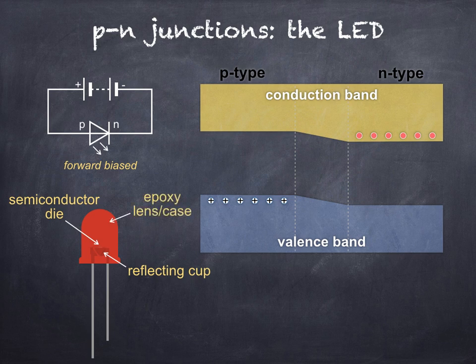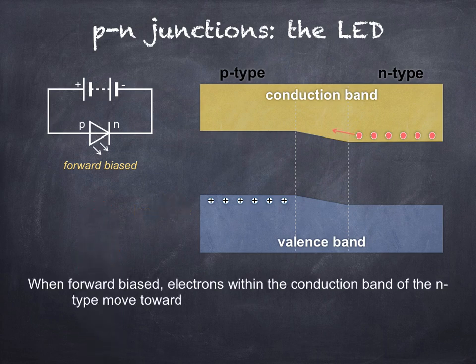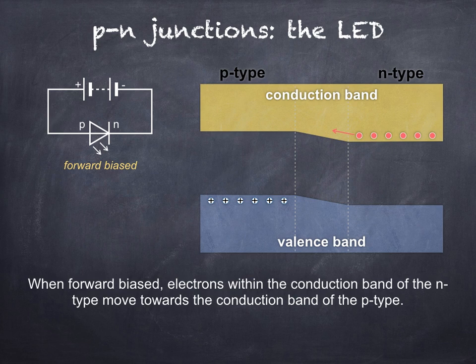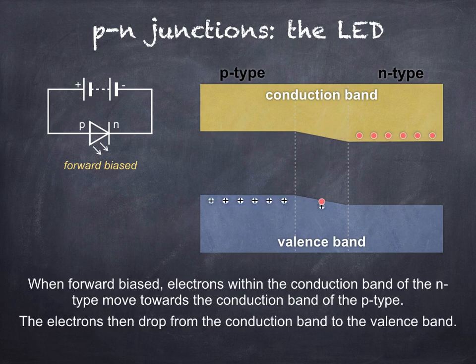Now, here's the important thing we need to know for higher physics. When the LED is forward biased, electrons within the conduction band of the n-type semiconductor move towards the conduction band of the p-type. Also, holes within the valence band of the p-type move towards the valence band of the n-type. Within the junction, electrons drop from the conduction band to the valence band and recombine with holes.